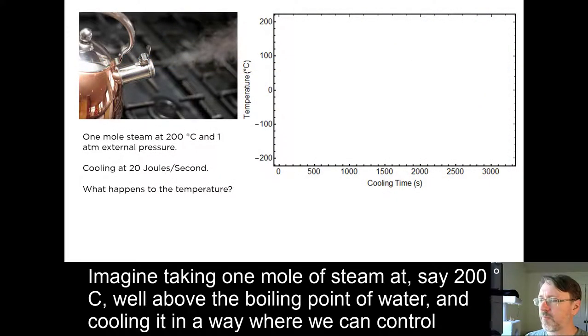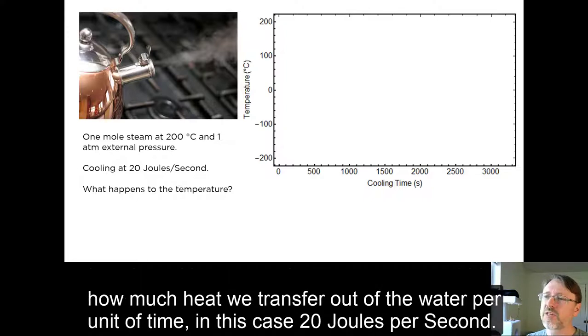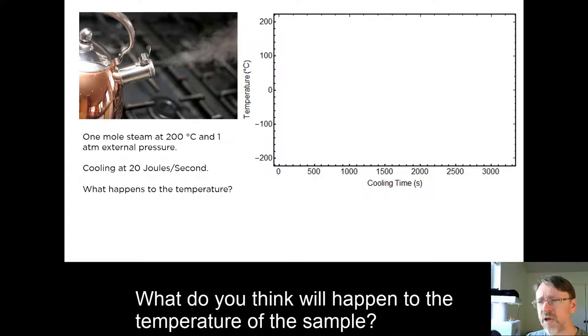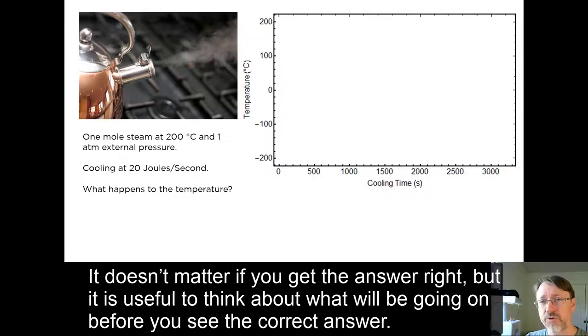Imagine taking one mole of steam at 200 degrees C, well above the boiling point of water, and cooling it in a way where we can control how much heat we transfer out of the water per unit of time. In this case, 20 joules per second. What do you think will happen to the temperature of the sample? Doesn't matter if you get the answer right, but it's useful to think about what will be going on before you see the correct answer.